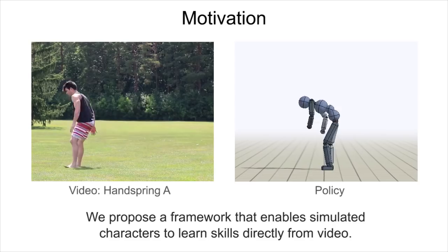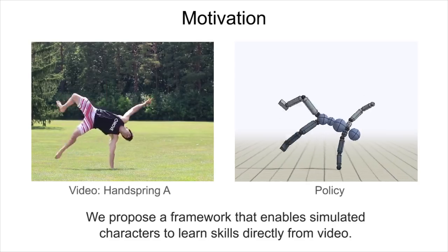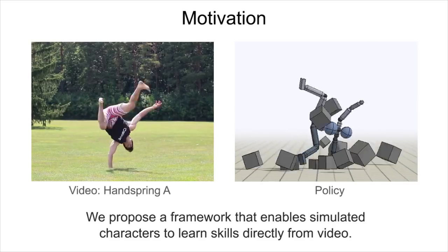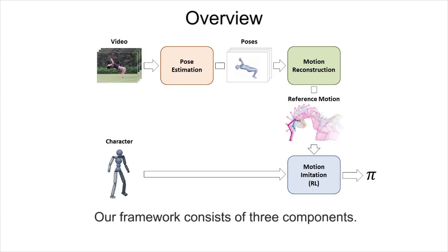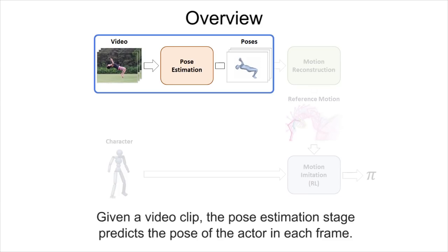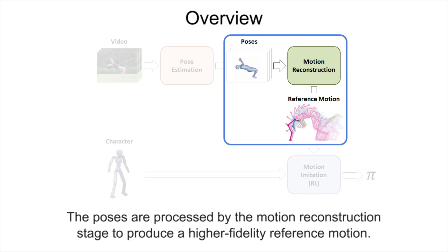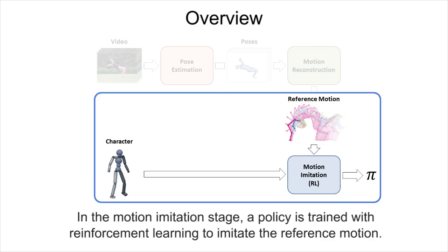We propose a framework that enables simulated characters to learn skills directly from video. Our framework consists of three components. First, given a video clip, the pose estimation stage predicts the pose of the actor in each frame. The poses are processed by the motion reconstruction stage to produce a higher fidelity reference motion. In the motion imitation stage, a policy is trained with reinforcement learning to imitate the reference motion.